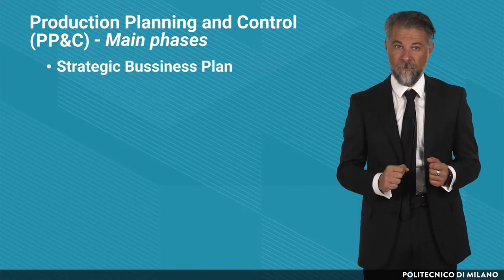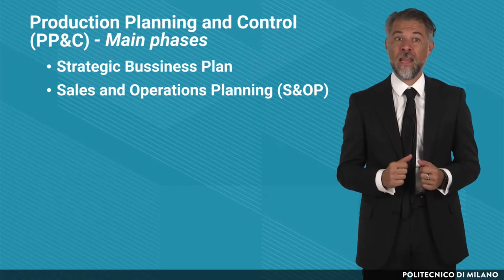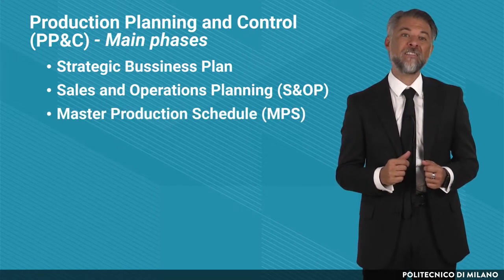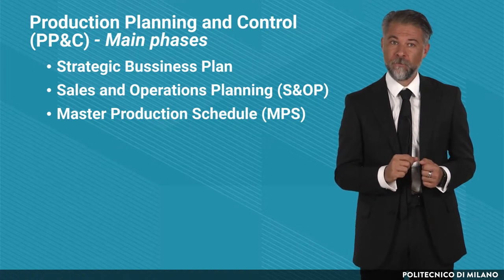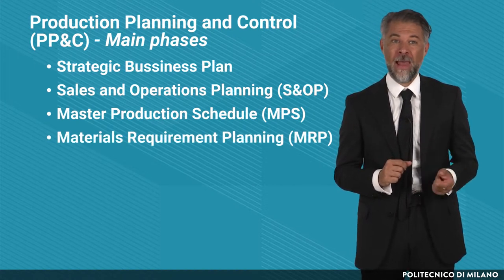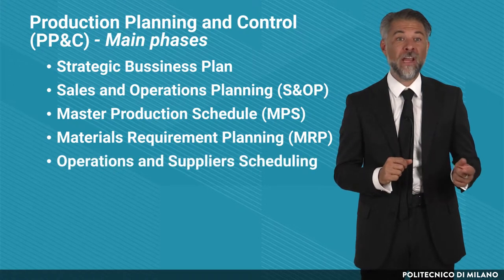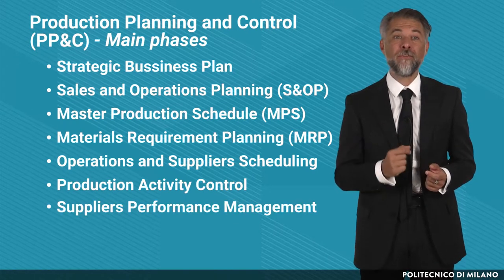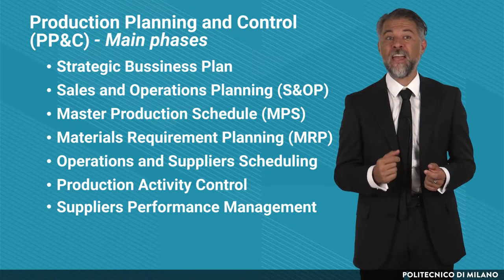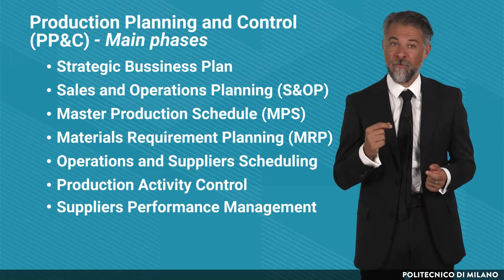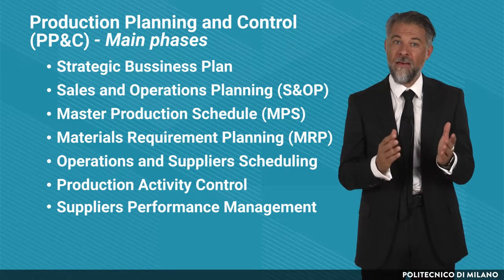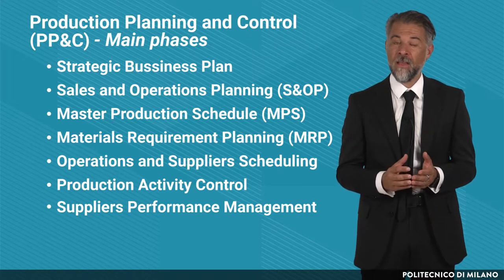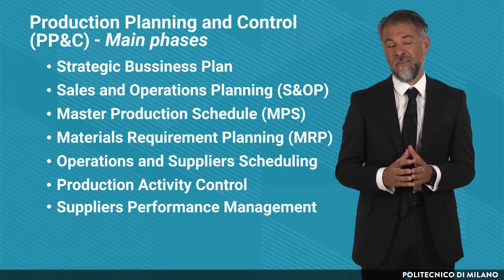The main phases are: Strategic Business Plan, Sales and Operations Planning, Master Production Schedule, Materials Requirements Planning, and Operations and Supplier Scheduling, Production Activity Control and Supplier Performance Management. Every phase will be defined and discussed in terms of inputs, degrees of freedom, level of aggregation and planning horizon, and output of the phase. The first stage of the PPC process is the Strategic Business Plan.